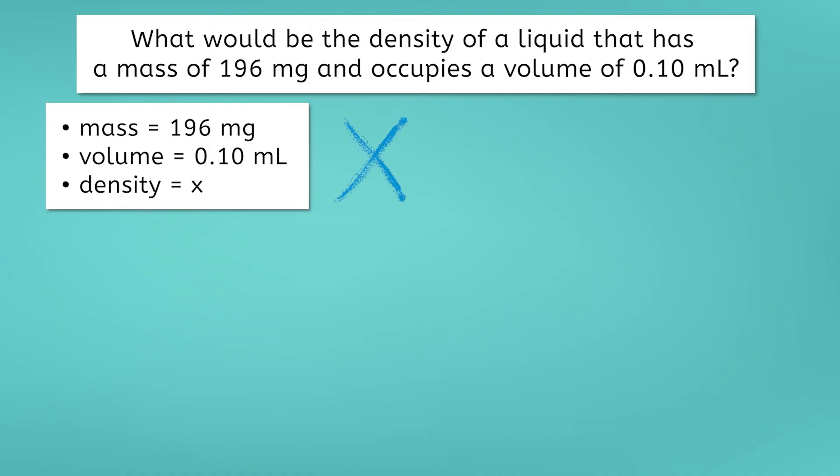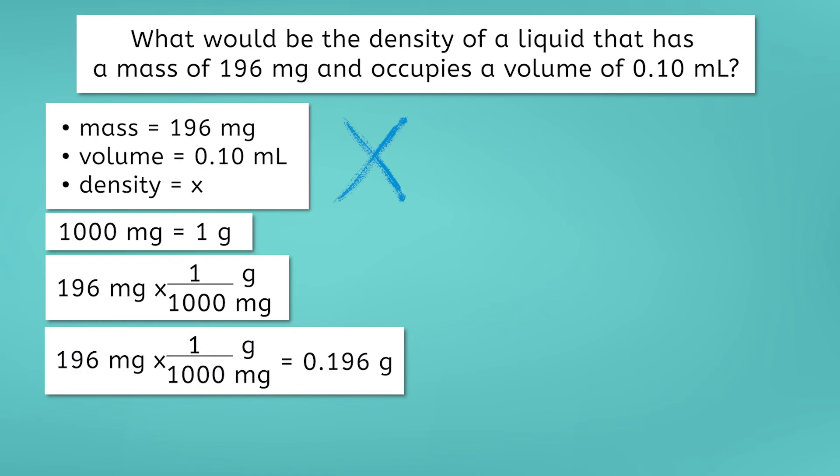This is where our unit conversions come in handy. Think back to our previous two lessons. What is the conversion factor for milligrams and grams? One thousand milligrams is equal to one gram. Great! Using our conversion factor, we can take the mass of 196 milligrams and multiply it by one gram divided by one thousand milligrams. Remember, you want to have the unit you are changing in the denominator and unit you need in the numerator. 196 times one, then divided by one thousand, is equal to 0.196. So 196 milligrams is equal to 0.196 grams.